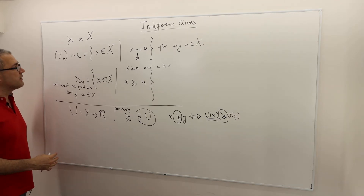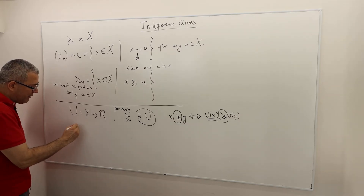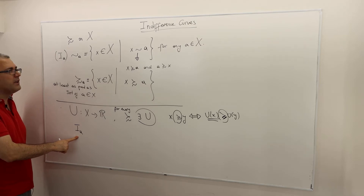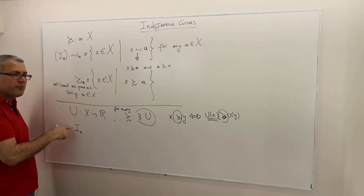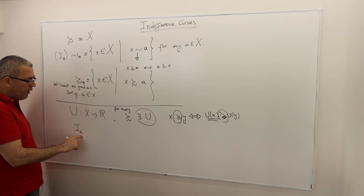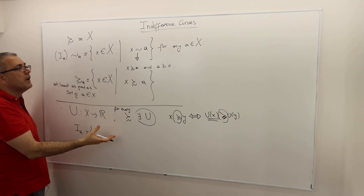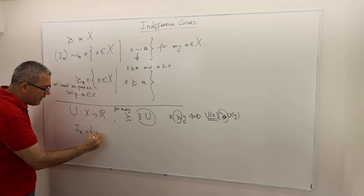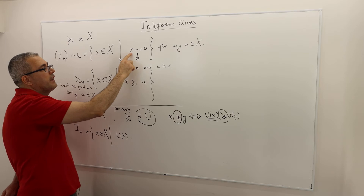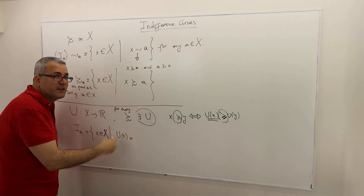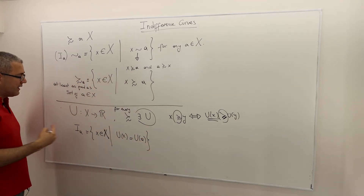When we talk about an indifference curve, we can write it in utility form. Using the I(a) notation, the indifference curve of alternative a is the set of x in X such that utility of x equals utility of a. So instead of saying 'x is indifferent to a,' we write u(x) = u(a).